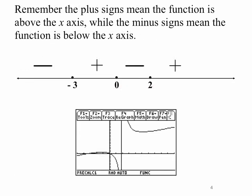So again, we have down here a picture of the actual graph. And you can compare that to what we have up here on the sign line. And now, we just remember that the plus signs mean the function is above the x-axis, while the minus signs mean the function is below the x-axis.